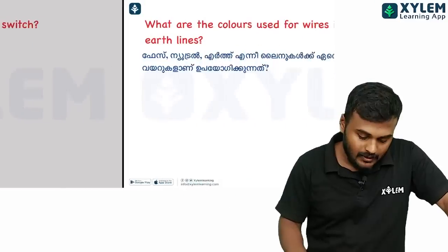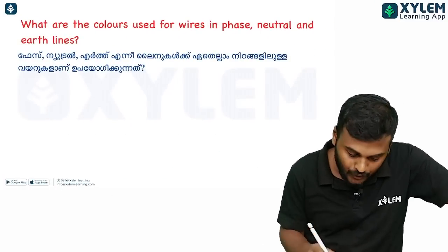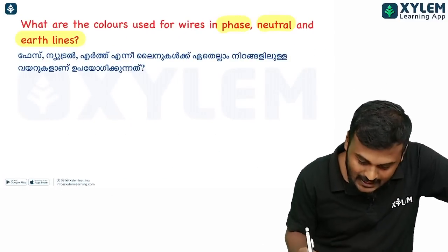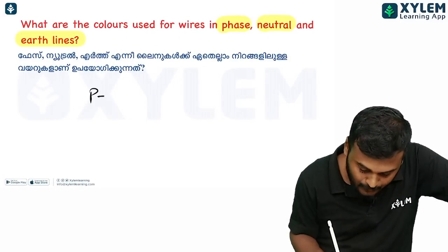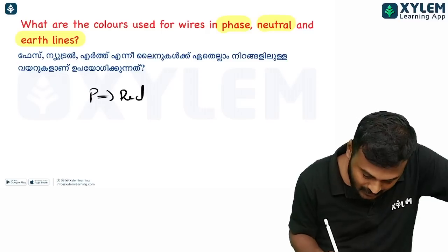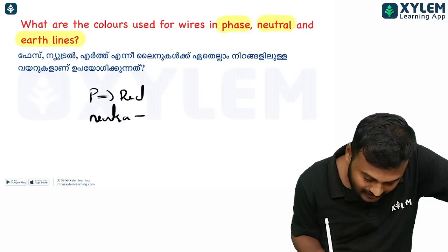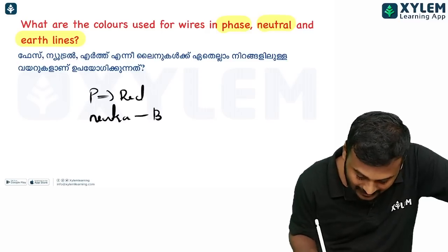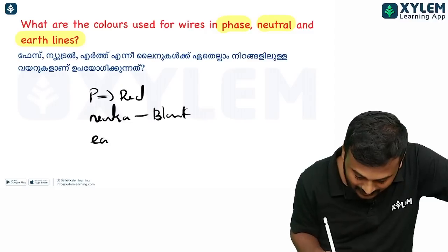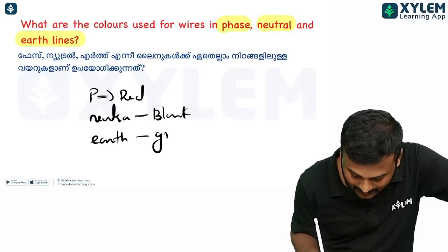What are the colors used for the live, neutral, and earth lines? The live wire is red, the neutral wire is black, and the earth wire is green.